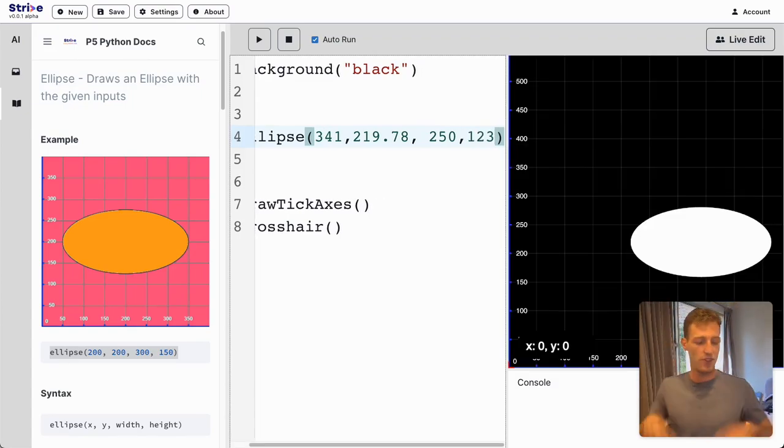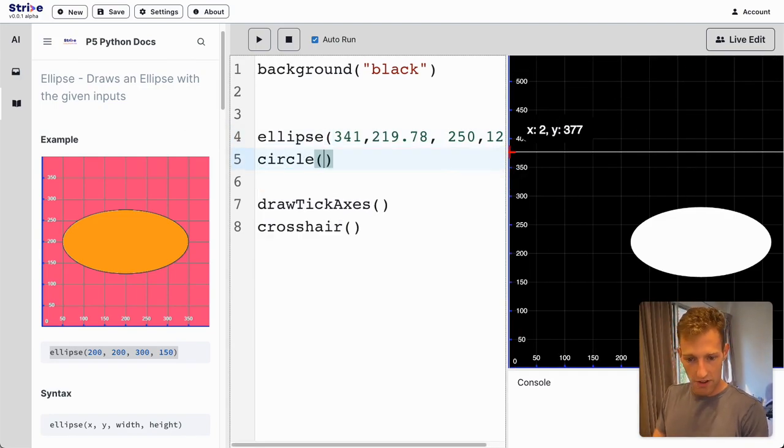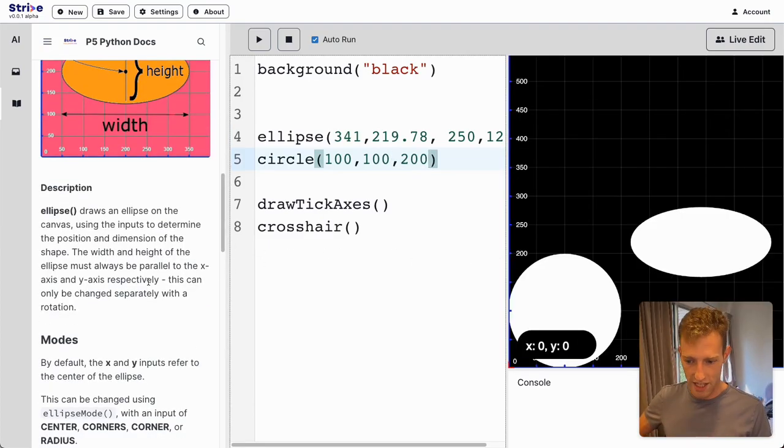Cool, we get an ellipse and it's stretched out. So you can use circles and ellipses for all your needs of circular objects.